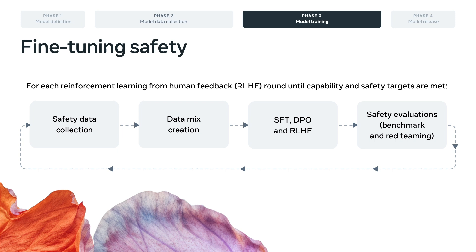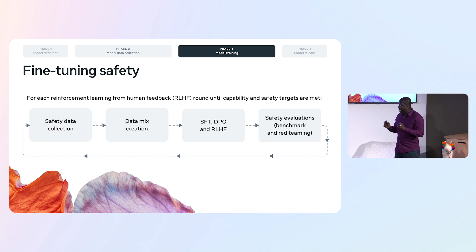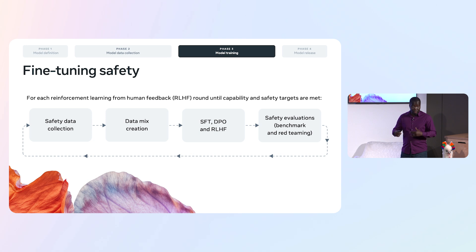Once we have a reasonably pre-trained model with some safety abilities, we further align the model toward the set of safety policies we care about. We start by collecting very high-quality safety data, then mix that with helpfulness data for the type of model we want to develop. We go through rounds of SFT and DPO. Once we have a set of checkpoints, we evaluate them extensively against the benchmarks we have and do adversarial red teaming for data discovery. We repeat this stage multiple times until we reach the desired safety goals.